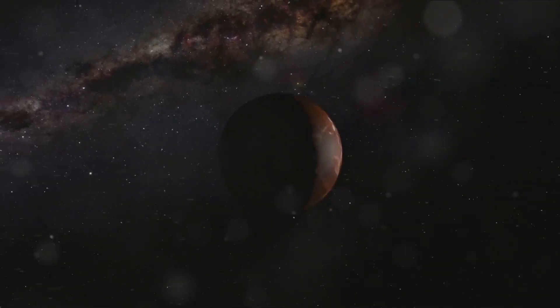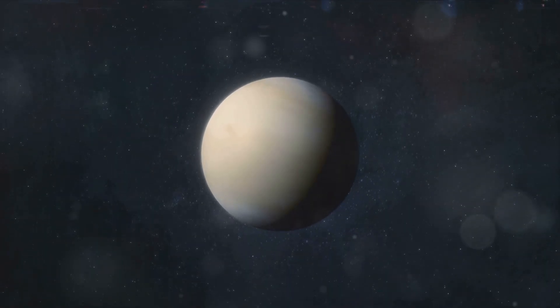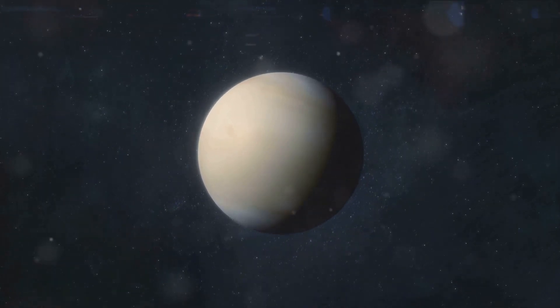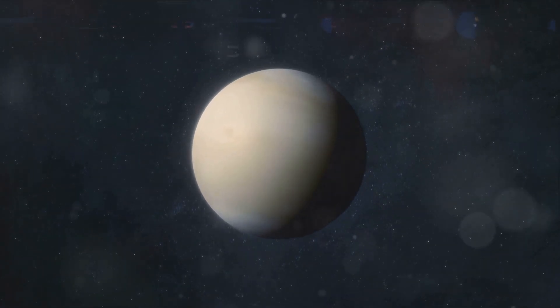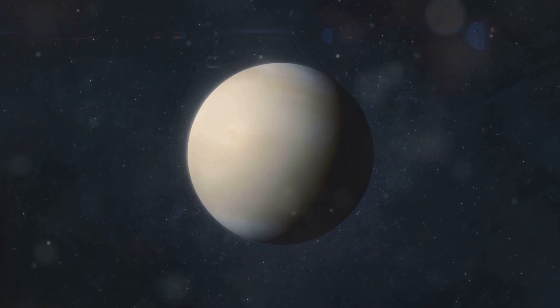But that's not all—Venus also has a remarkable surface. Its landscape is a dramatic tableau of craters, towering volcanoes, grand mountains, and expansive lava plains, a testament to its tumultuous geological history.